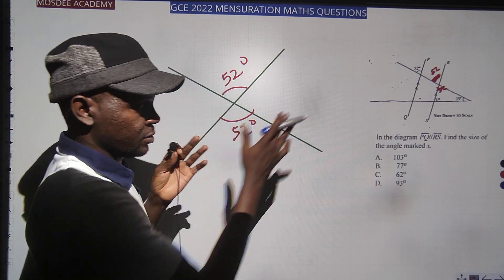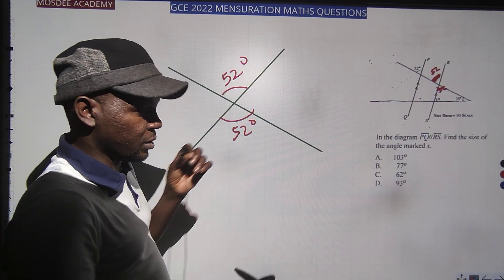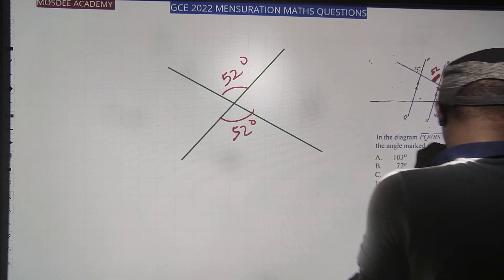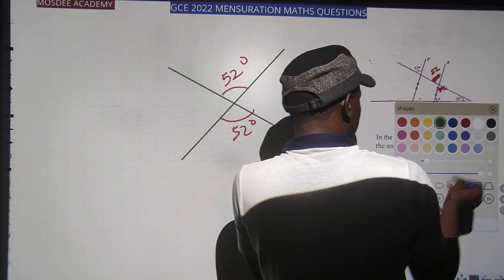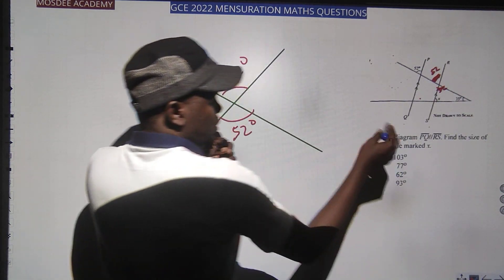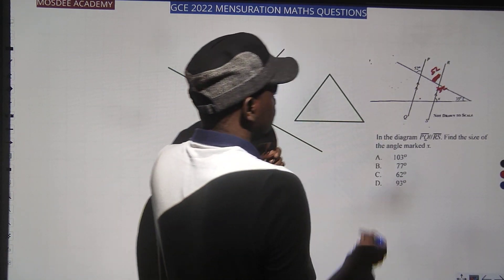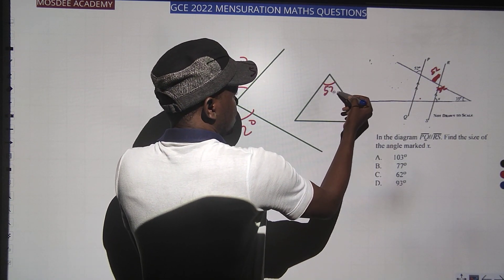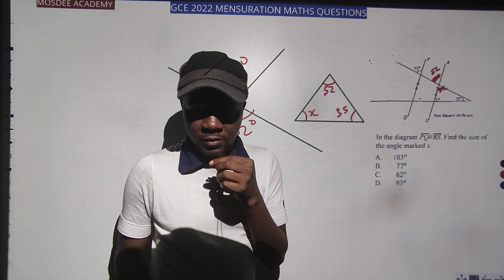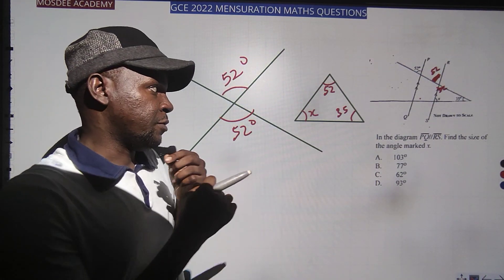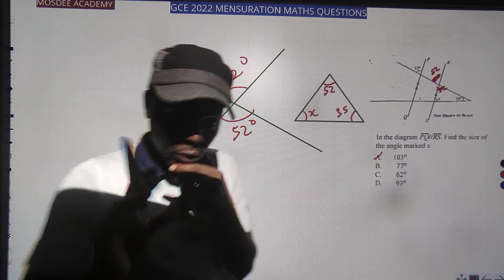Now I have a triangle with angles 52°, x, and 35°. Sum of angles in a triangle is 180°. So 52 + 35 = 77, and x = 180 minus 77, which gives 103°. That is the answer. I hope you guys understand this.